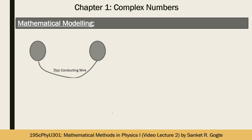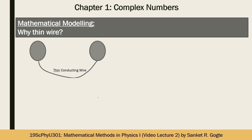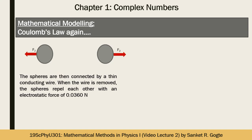Why do we need a thin wire? If the wire is not thin enough and has sufficient surface area, some charge is retained by the wire and our equation will not work. The wire must be thin enough that any charge it carries is negligibly small.